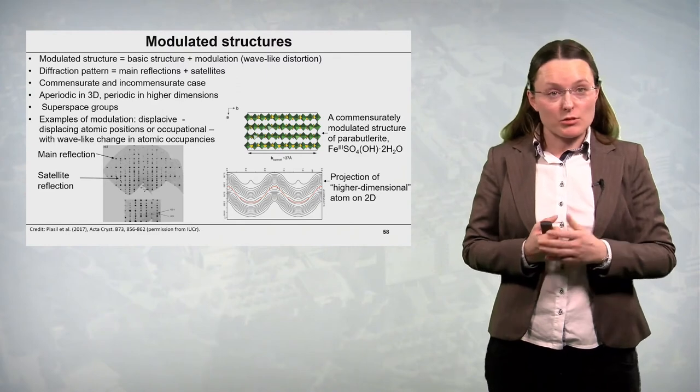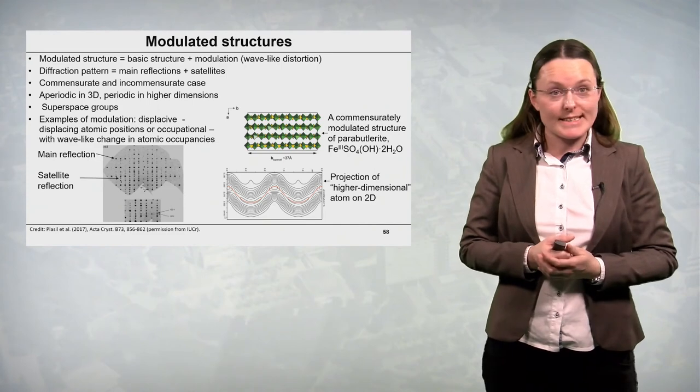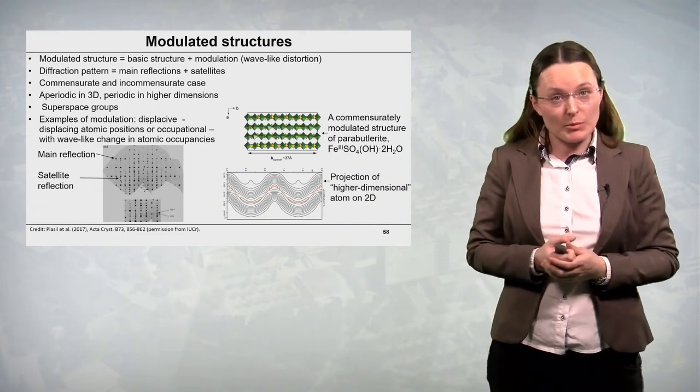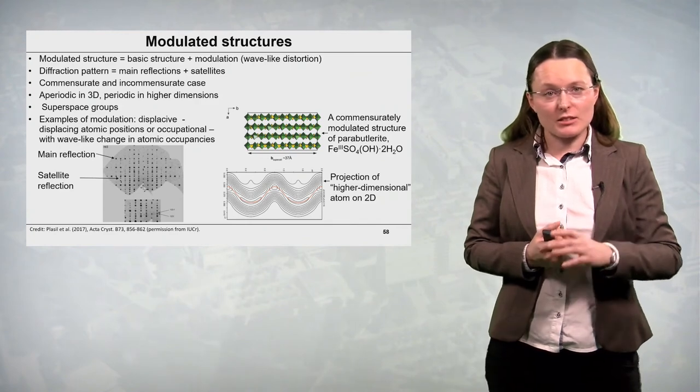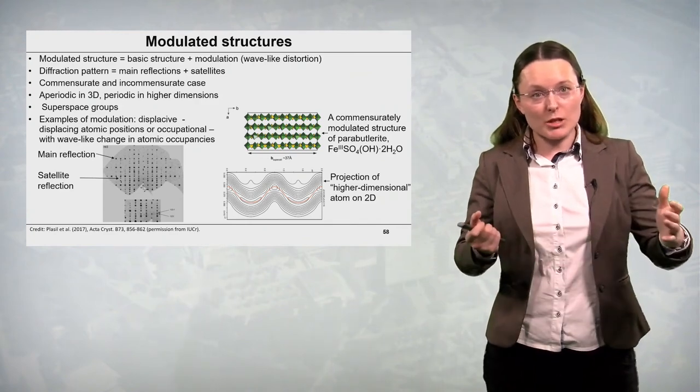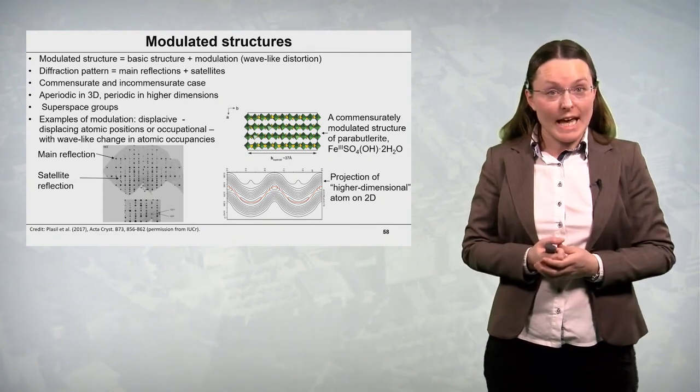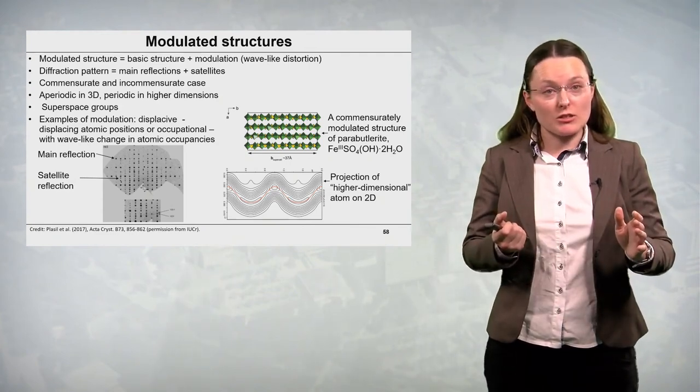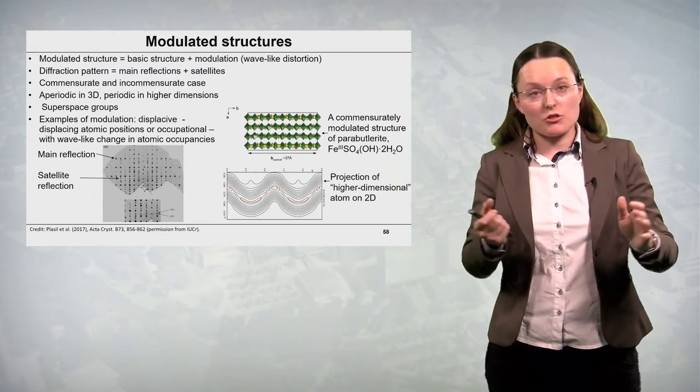And it was noticed that indeed incommensurate modulated structure is aperiodic in three dimensions. But we can define certain associated higher dimensional structure which is periodic in higher dimensions. And incommensurate modulated structure is a three dimensional projection of this higher dimensional structure.